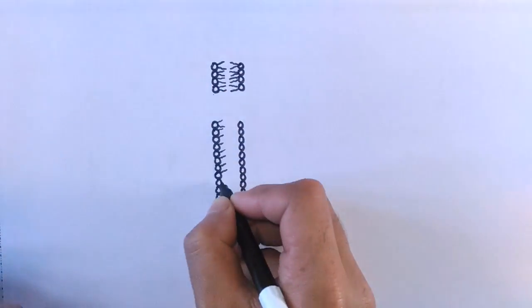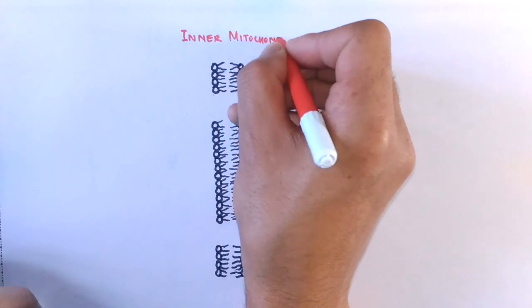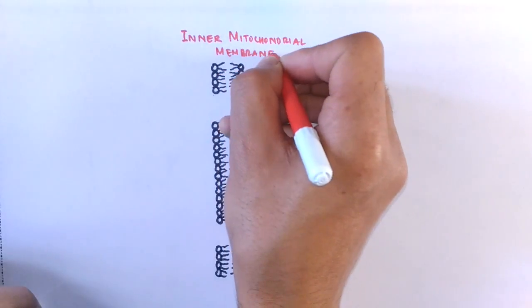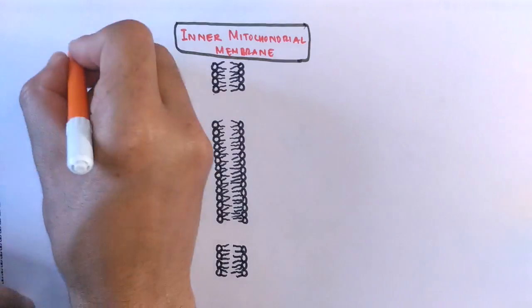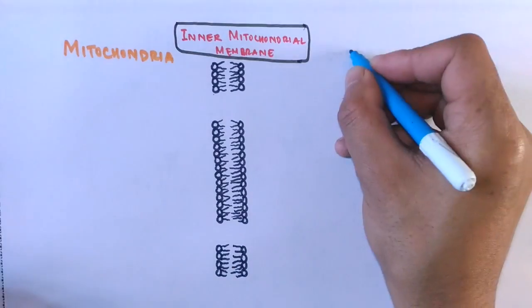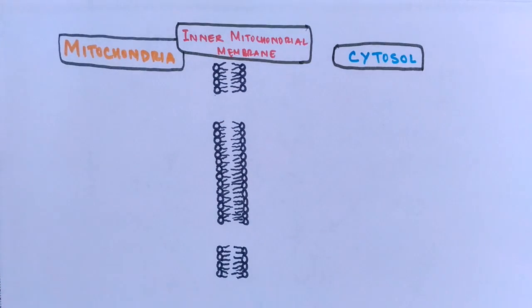The inner mitochondrial membrane acts as a chemical barrier. It is only freely permeable to oxygen, carbon dioxide, and water; other molecules cannot cross this inner membrane easily without carrier proteins. The outer membrane is not shown here to keep things simple, although molecules do cross it as well to reach the cytosol. On the left we have the mitochondria and on the right we have the cytosol.